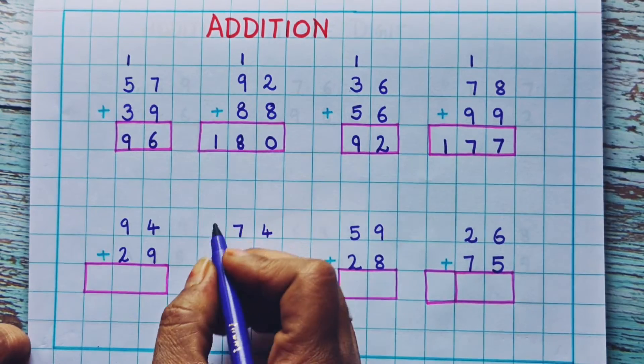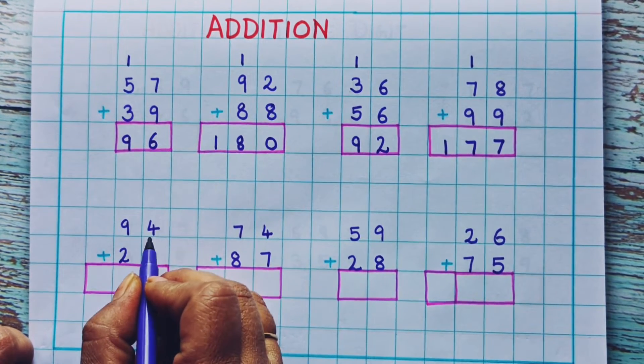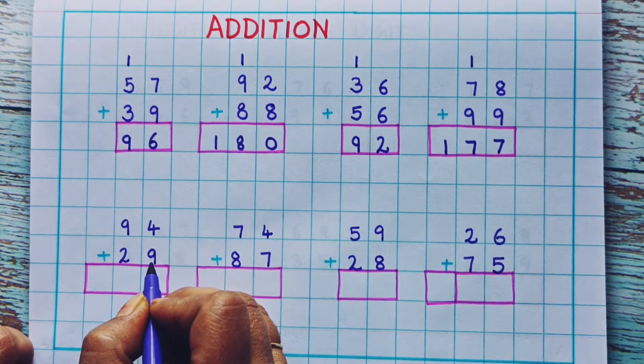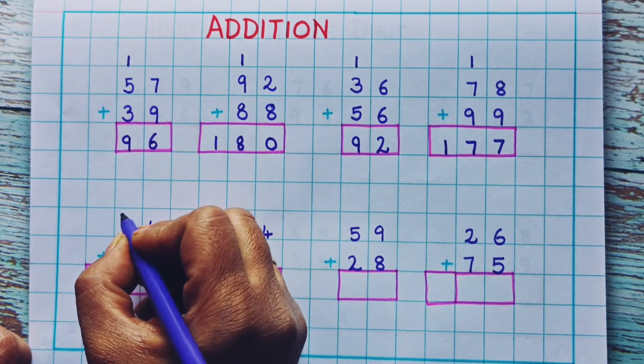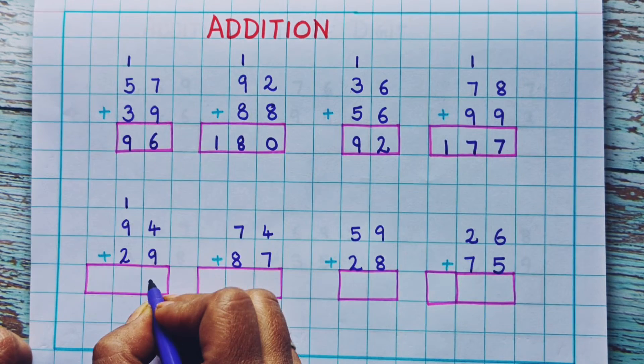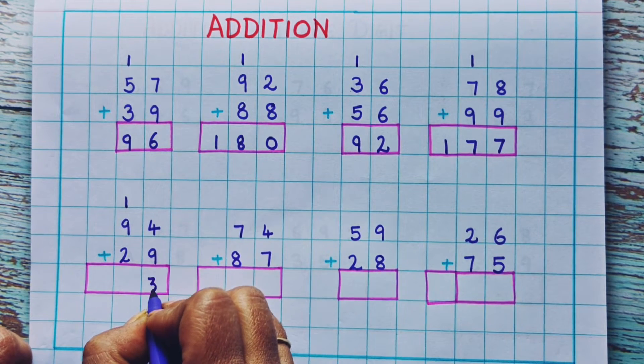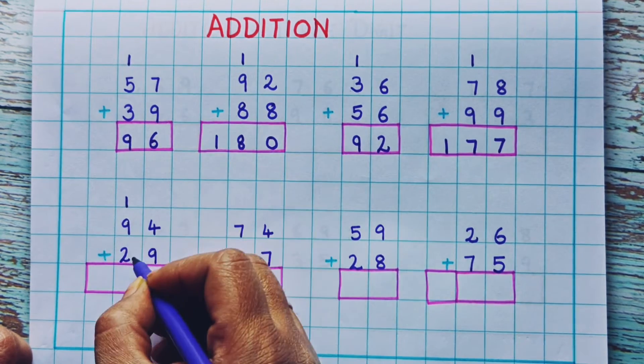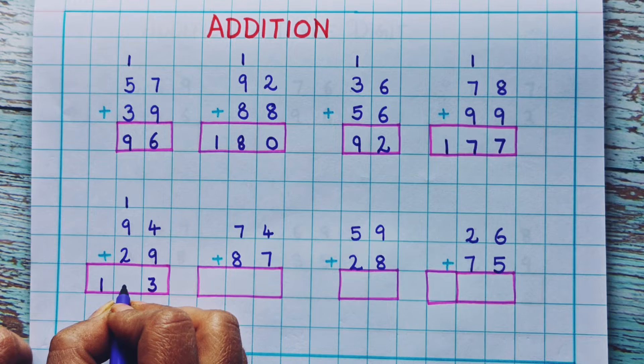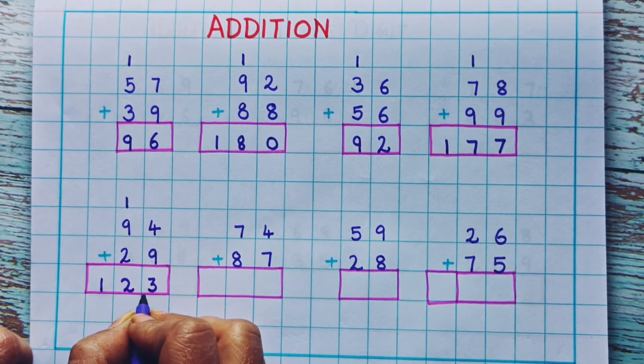Now let's do the next one. 94 plus 29. So let's do 4 plus 9. 4 plus 9 is 13. So here I will write 1 and here 3. Now 1 plus 9 is 10. 10 plus 2 is 12. So the answer is 123.